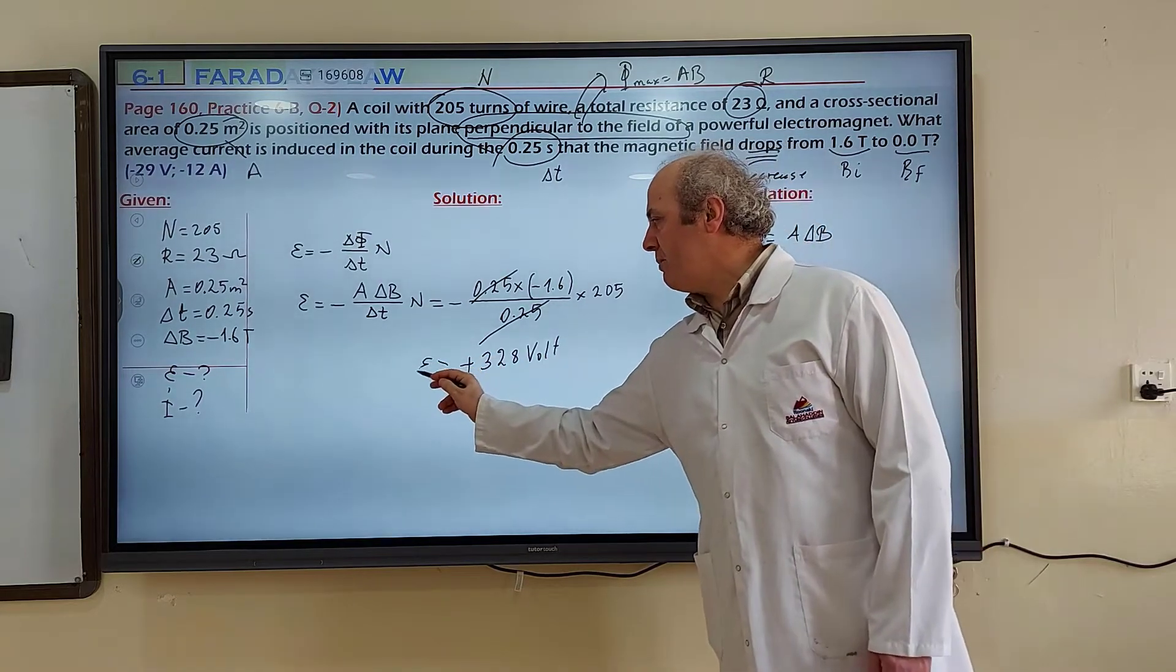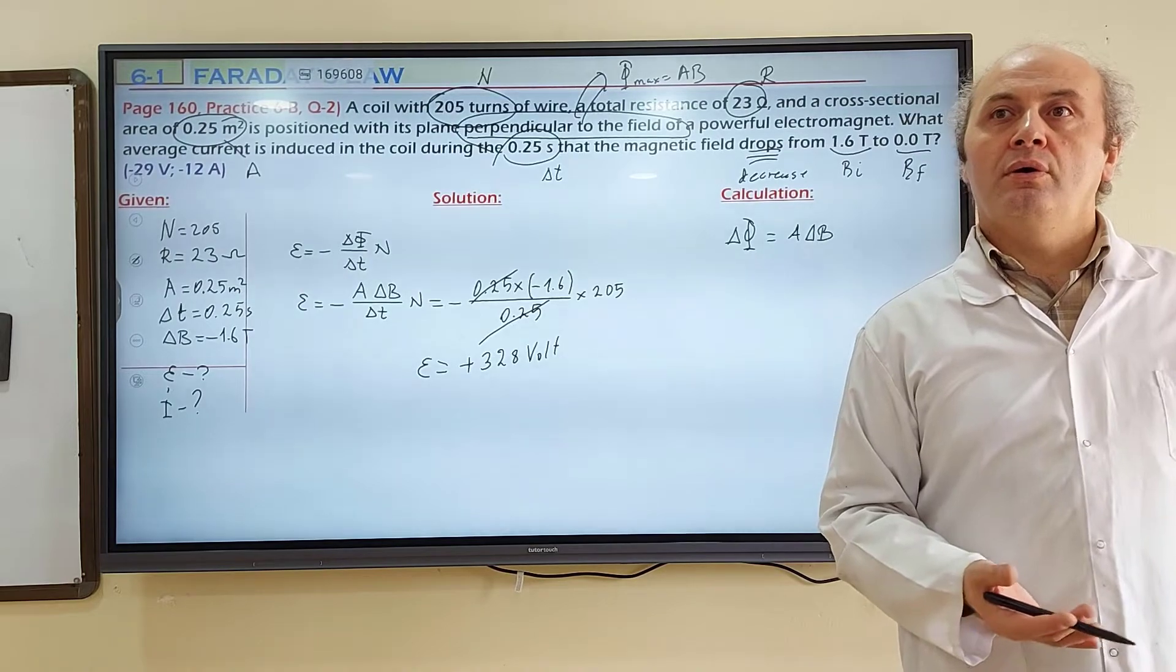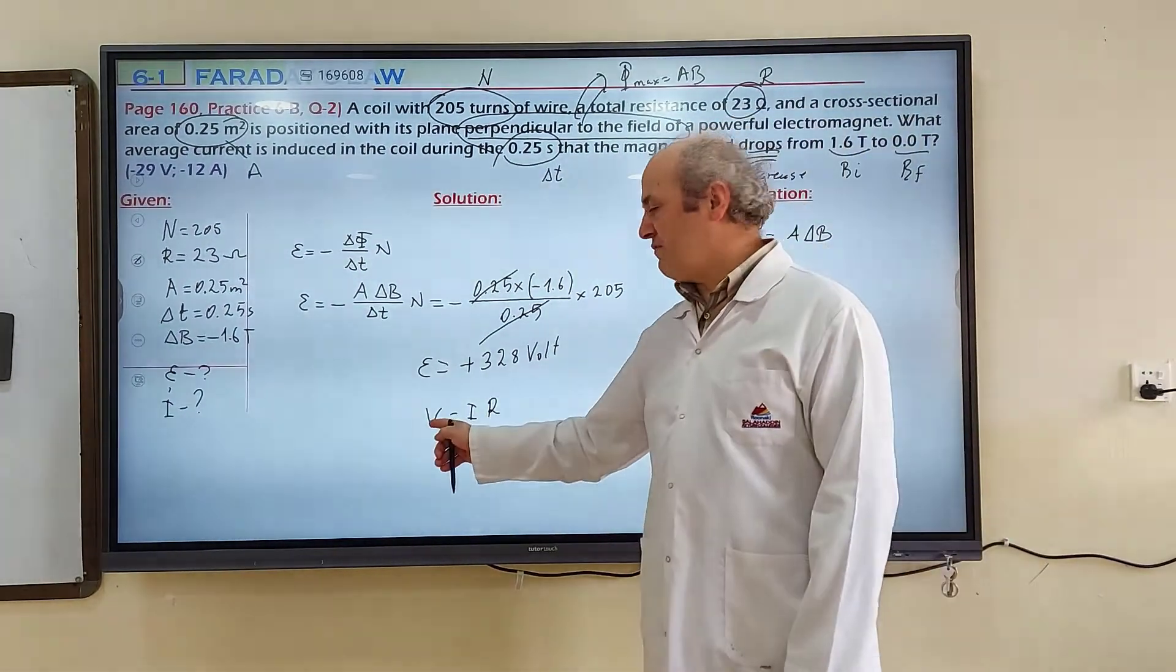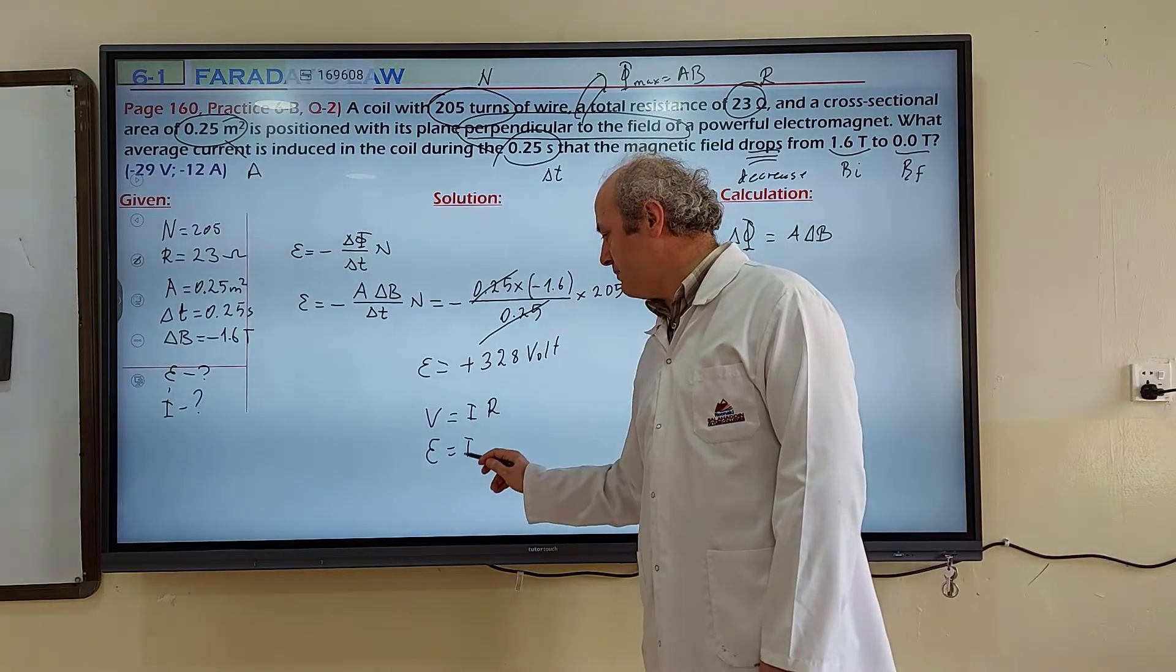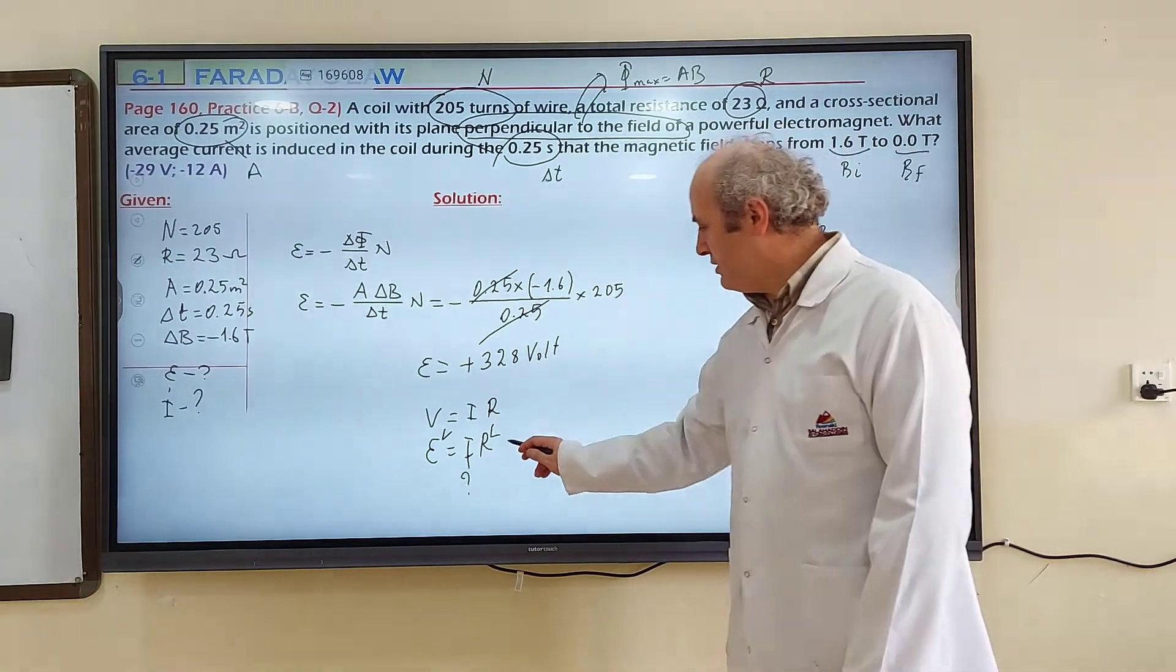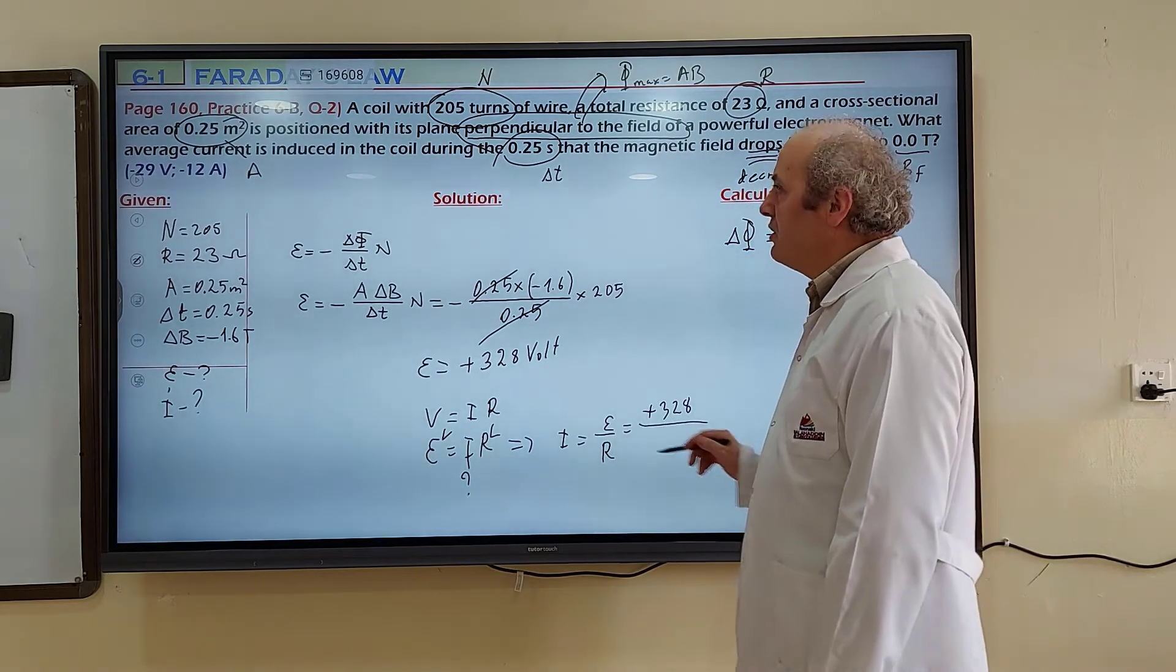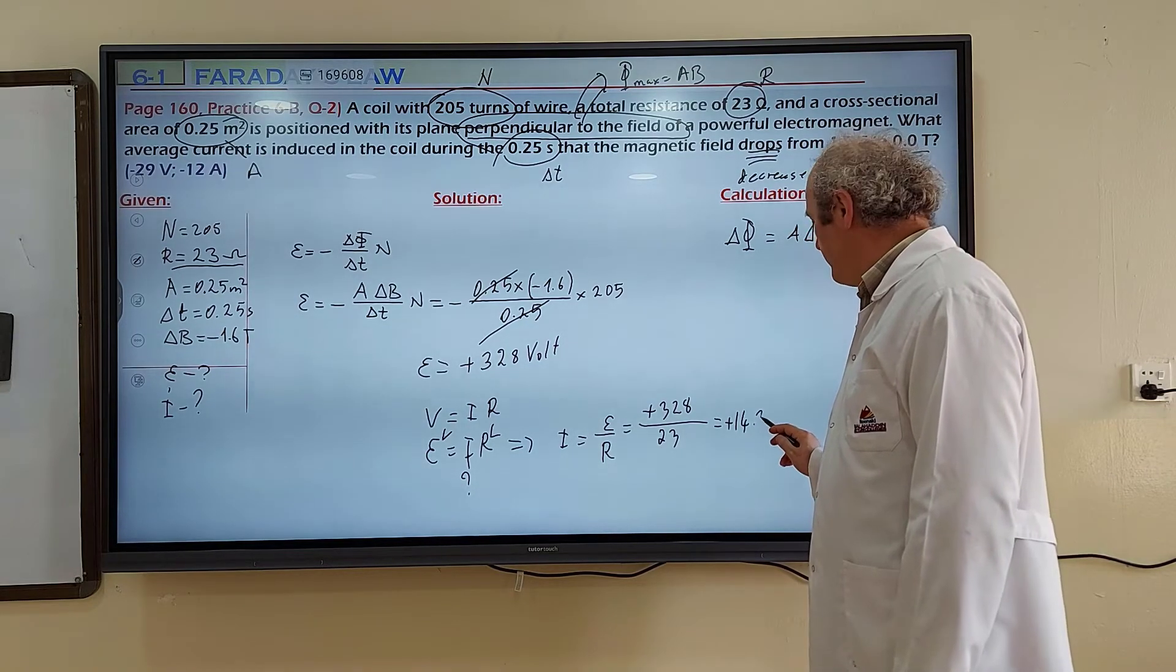This is induced EMF, but the question is asking for induced current. Using Ohm's law, when you see potential difference, we write induced EMF as epsilon. Epsilon equals I times R. Epsilon we calculated, R is given. How much is current? By dividing R from both sides, I equals epsilon divided by R. Epsilon is 328, R is 23. Divide them: positive 14.3 amperes.